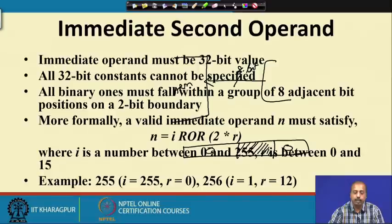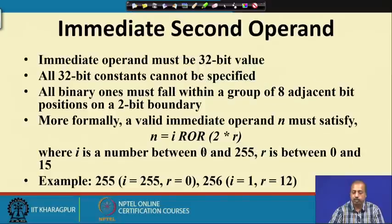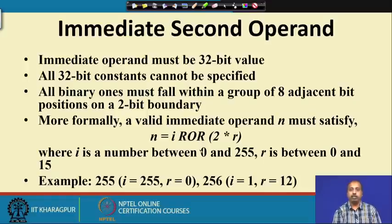That is why it is done this way. If you badly need numbers that do not fit into this category, you have to load that number into a register — keep that constant in a memory location, load it from memory into a register, and then do the register operation. If you are willing to use it as an immediate operand, you must follow this convention.